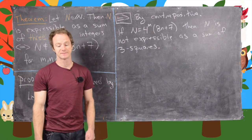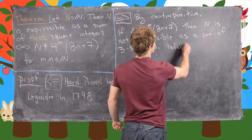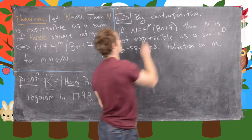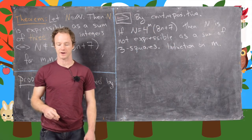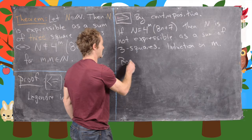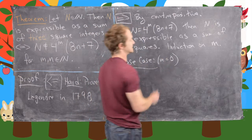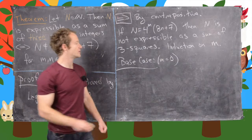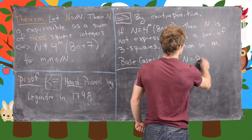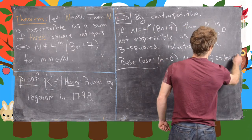We're going to do this by induction on m — in other words, the exponent of 4. So let's get started. We'll first look at the base case, which is m equals 0. In this case we get n equals 8n + 7, so that is congruent to 7 mod 8.